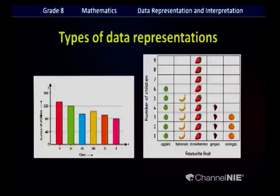Then we learnt how to represent data on a bar chart, or as we also name it, a column graph. First we represented data on a column graph, then we learnt how to represent data using multiple column graphs as well. So in grade 6 we learnt picture graphs, and in grade 7 we learnt column graphs.